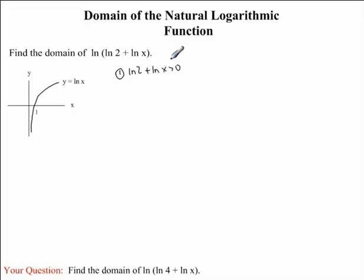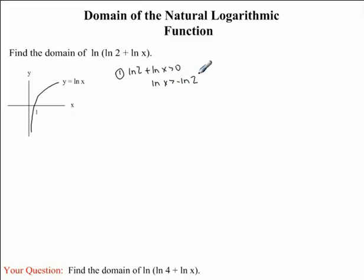Now we would like to solve for x. We're first going to bring ln2 to the other side of the inequality sign. When we do this, ln2 will become negative. Now, thinking back to our logarithmic properties, we can rewrite this such that the negative 1 in front of the ln is written as an exponent on the 2. So we will have lnx is greater than ln of 2 to the exponent negative 1.